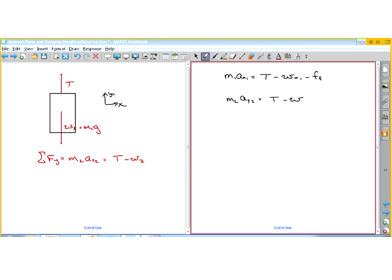So this is the difference of the friction force. So the unknowns are masses, the angle theta, and the coefficient of friction. The unknowns which are not specified but can be calculated are A sub X1, A sub Y2, T, W sub X1, friction force, and W2.